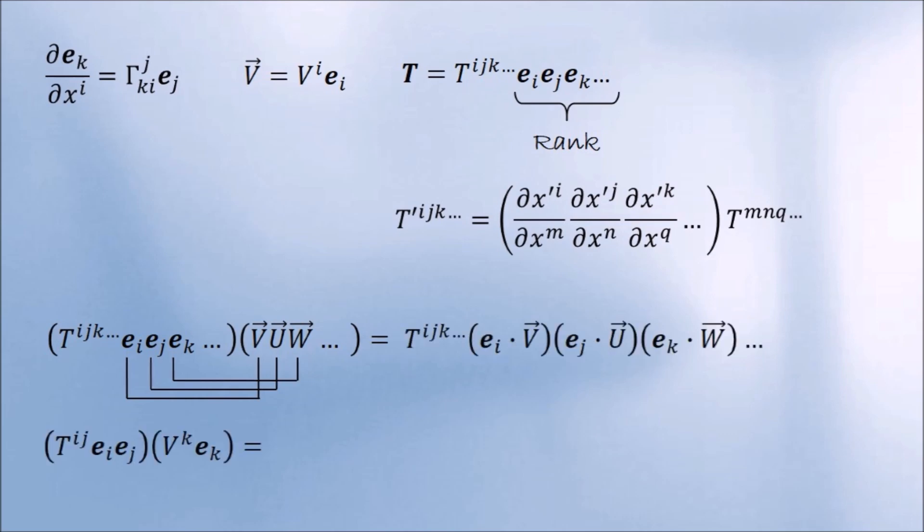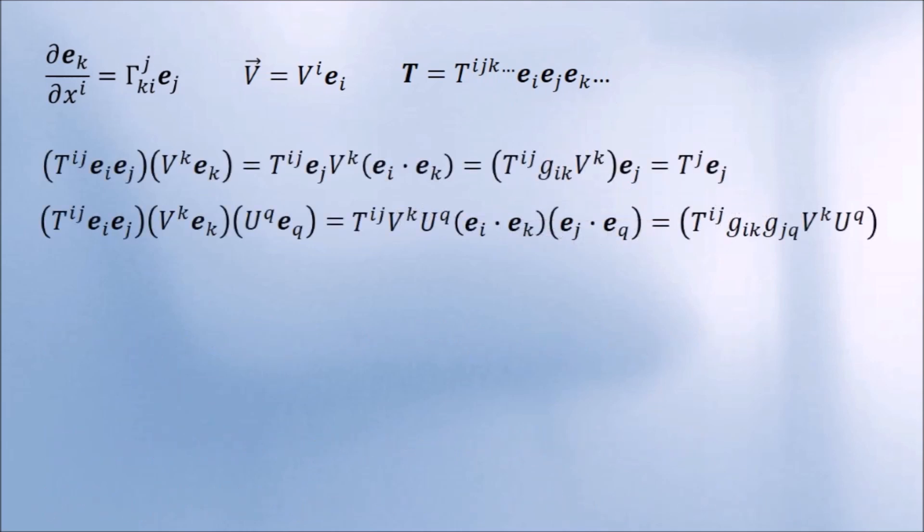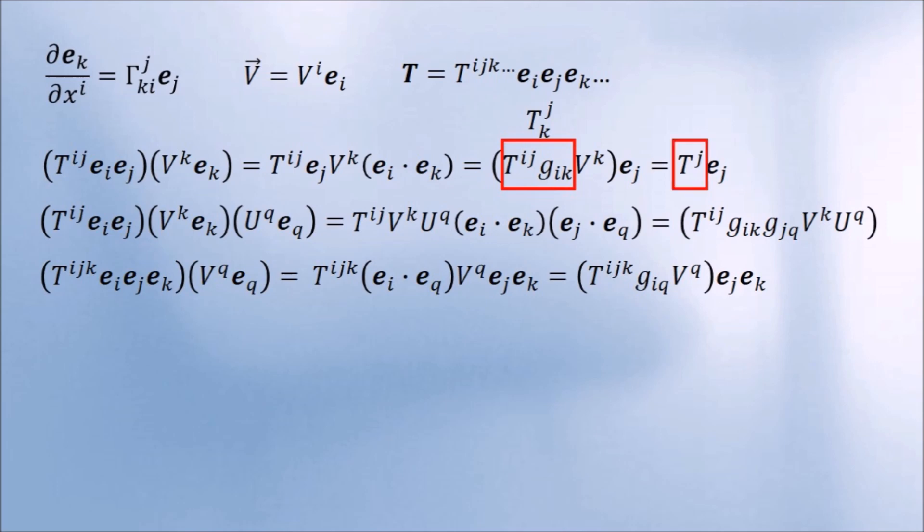For example, by having a rank 2 tensor act on a vector, we end up with a vector. If the same tensor acts on two vectors, we end up with a scalar. If a rank 3 tensor acts on a vector, we end up with a rank 2 tensor. Notice the effect of the dot product on the tensor components. Here, for example, the index i gets contracted, creating a mixed tensor, which, when summed together with k, produces a single index object that transforms covariantly.